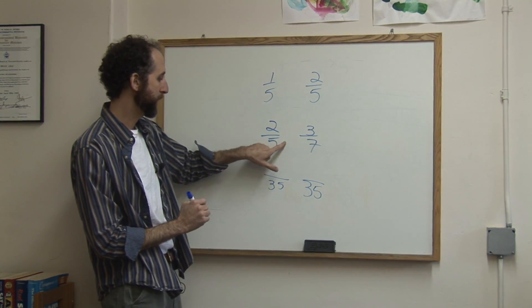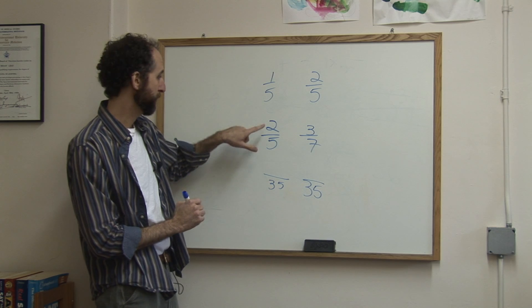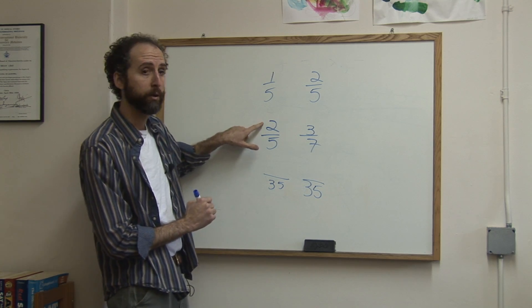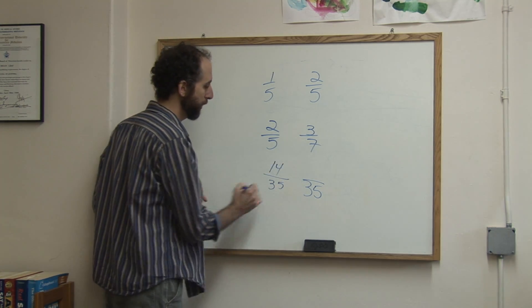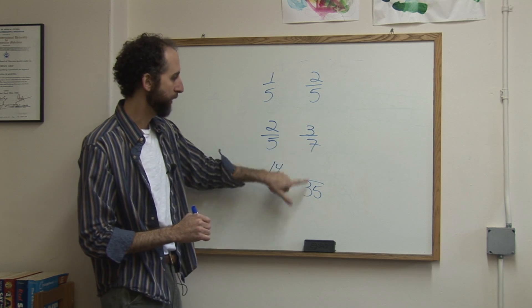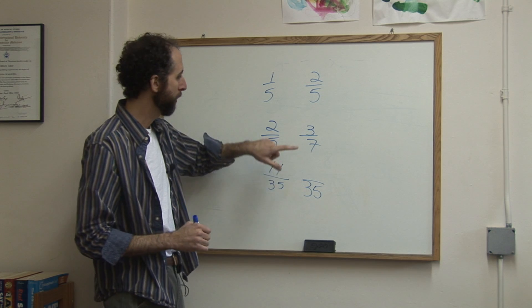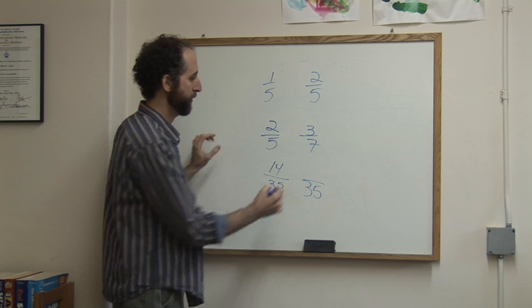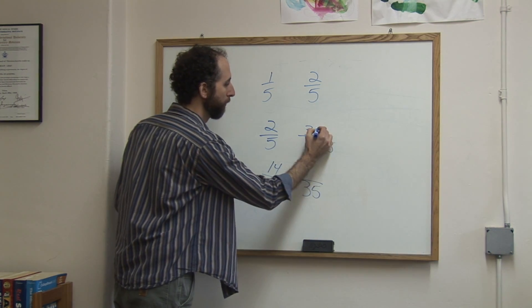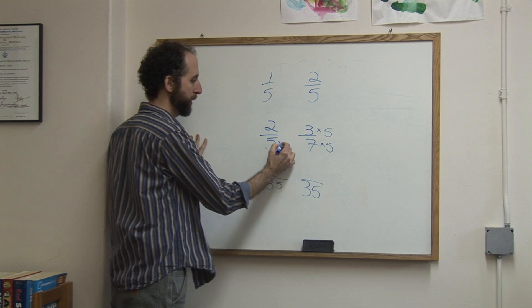So five times seven is thirty-five. That means I have to multiply the top by seven as well. Two times seven is fourteen. Here, I wanted to get thirty-five, so I have to multiply seven by five to get thirty-five. So I have to multiply the top by five as well. I'm going to write it here. And this one was by seven.